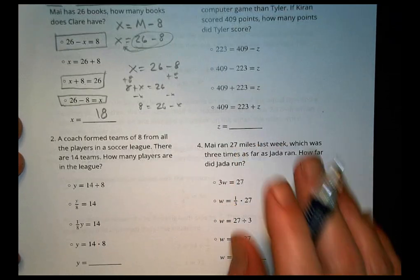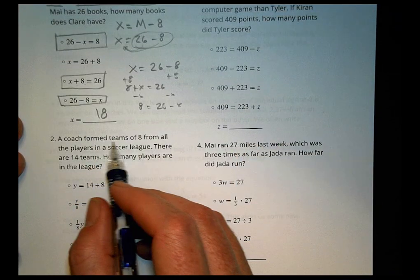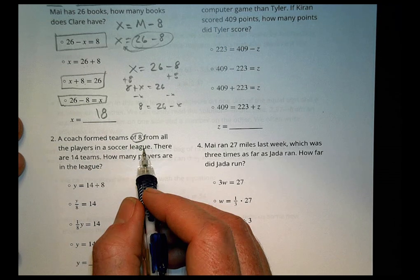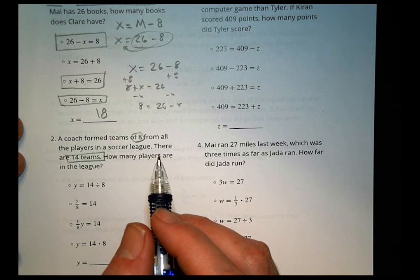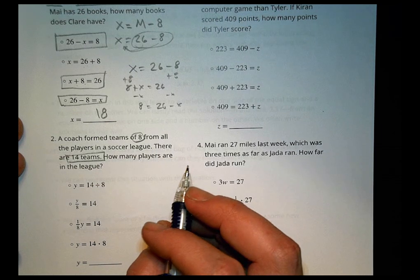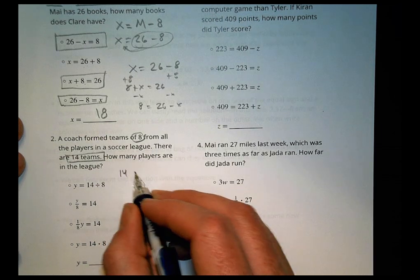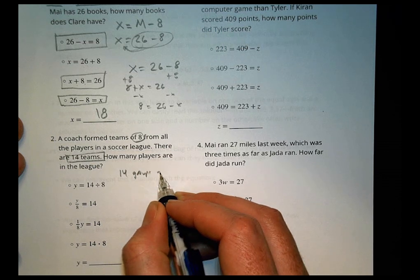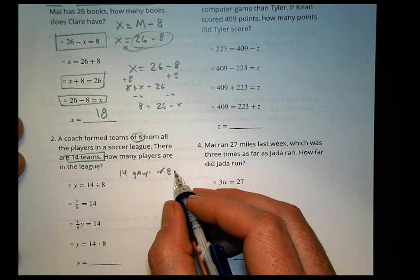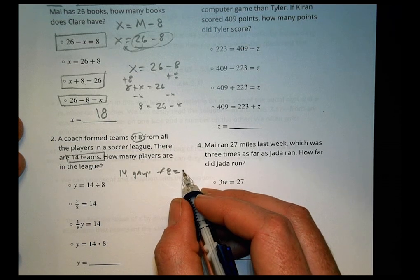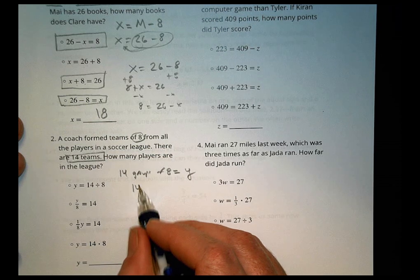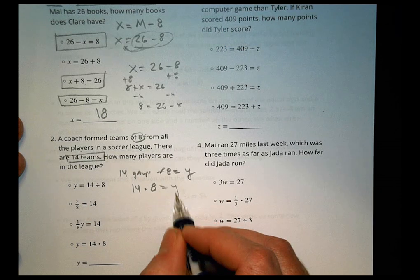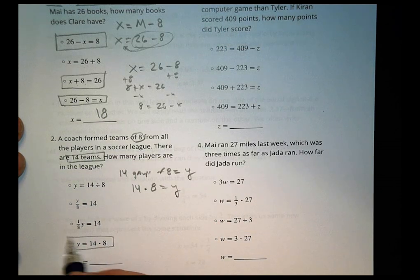For number two, it says, Coach formed teams of eight from all the players in the soccer league. There are 14 teams. How many players are in the league? So what do we know? That there are 14 groups of eight soccer players. And all together, that's going to be how many, we're using y, there are all together. So we have 14 groups of eight, or 14 times eight equals y. And we can see that one right there.